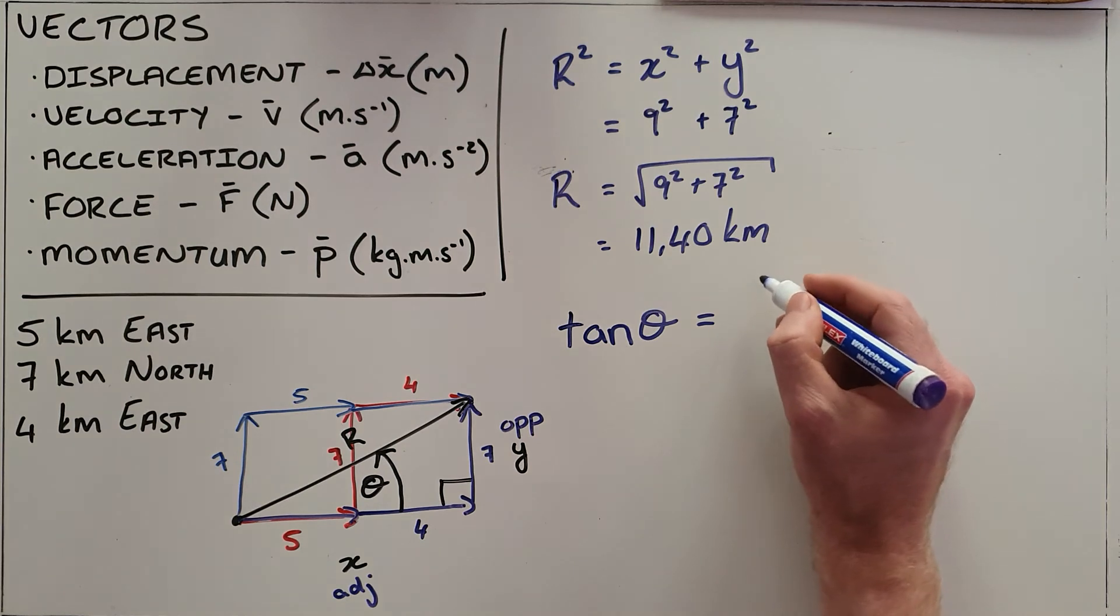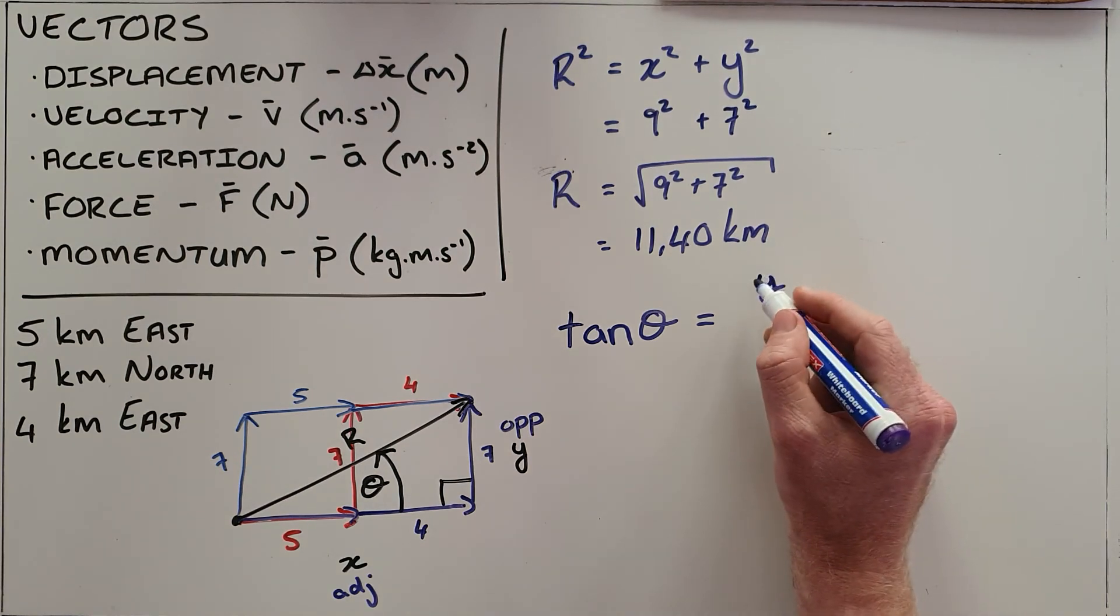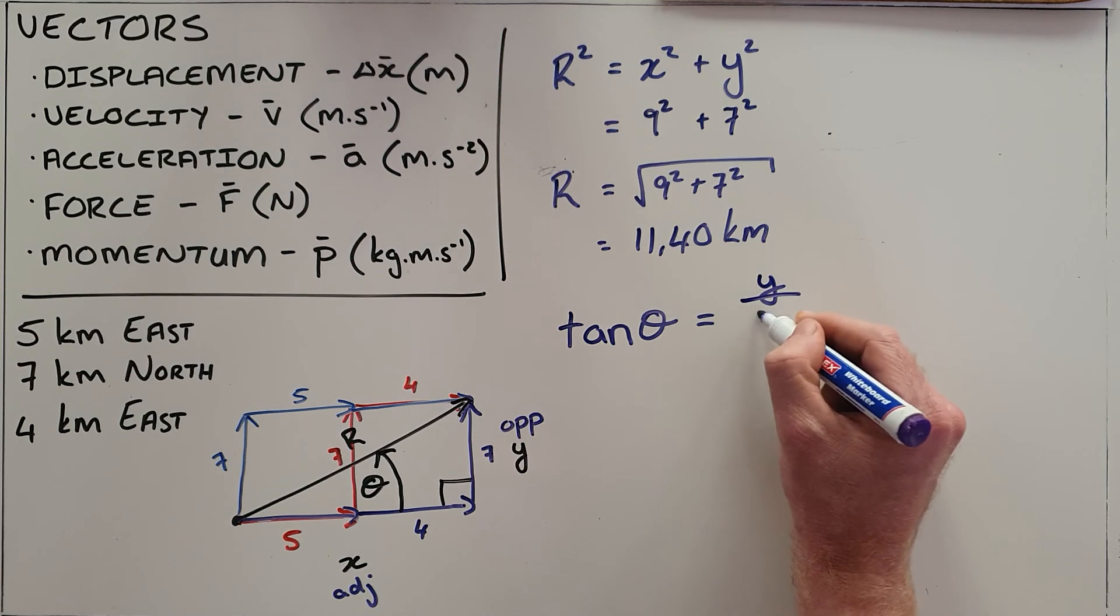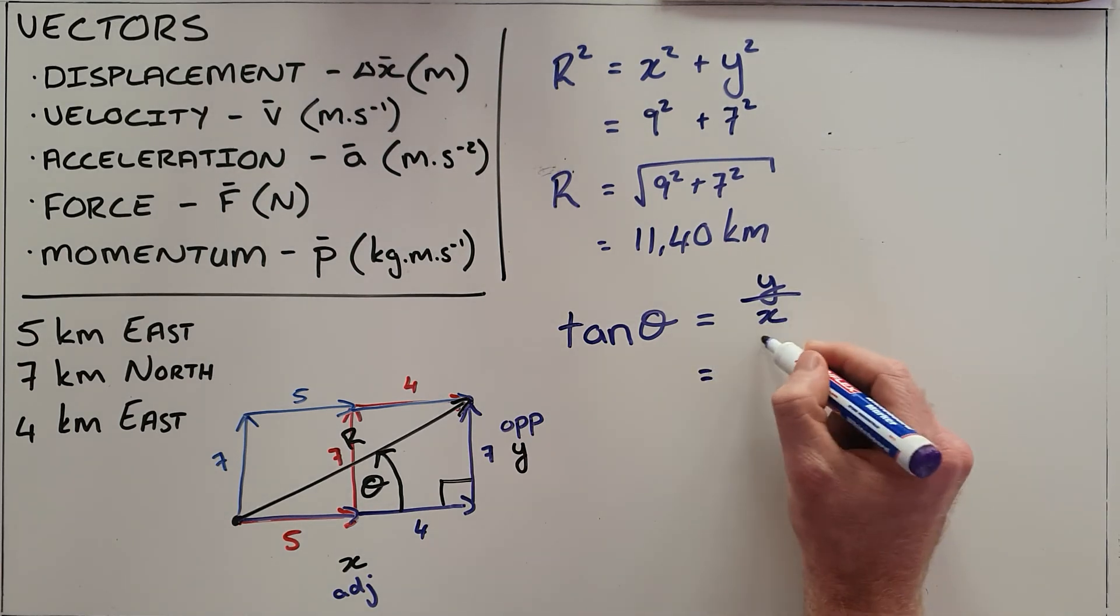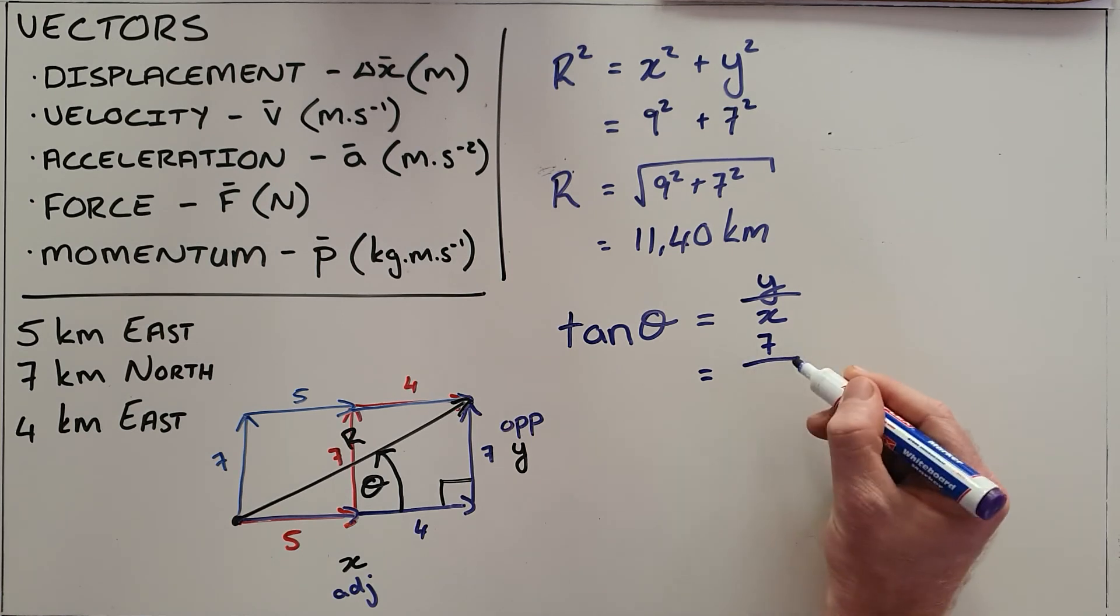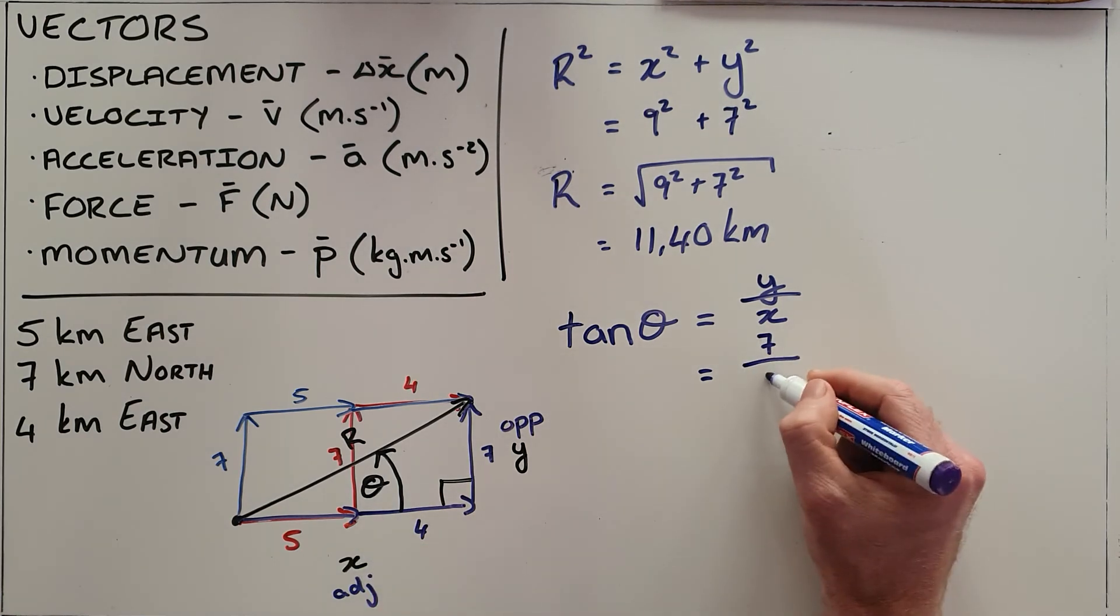In this case, that is the y component over the x component, and we can substitute our values. The y component we determined was 7, the x we found was 9.